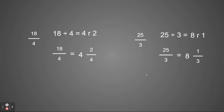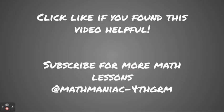So just to recap: if we're going from a mixed number to an improper fraction, we can use multiplication and addition. And if we're going from an improper fraction to a mixed number, we can use division and use our remainder for our fraction. I hope that this was helpful. Click like below and subscribe for more videos from the Math Maniac. Have a great day!